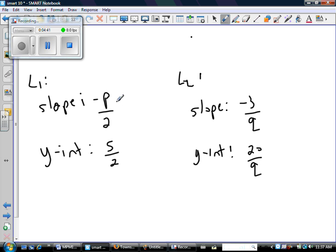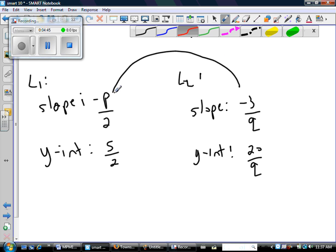This slope and this slope are supposed to be the same. We're told that they're the same lines, which means they have to have the same slope. They don't look the same, but that's why we have to figure out what p and q have to be to make them the same.